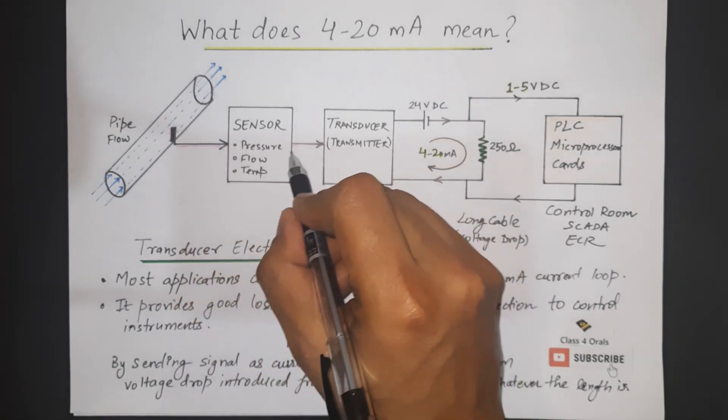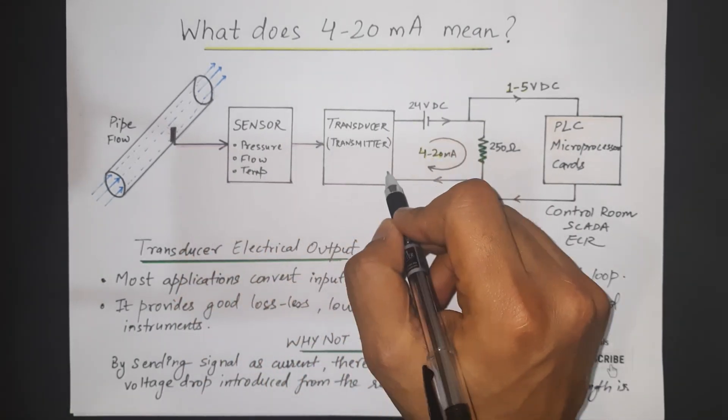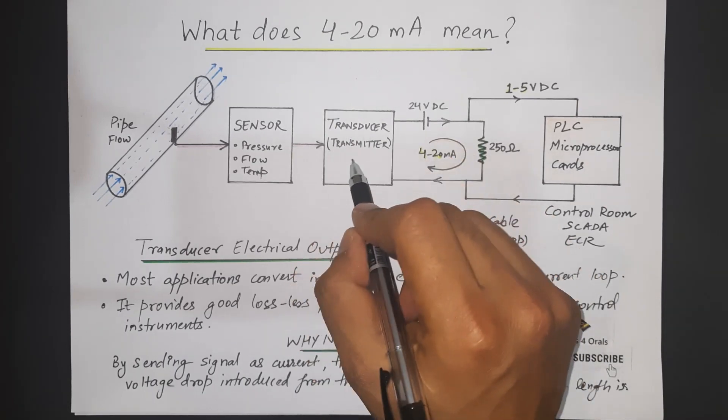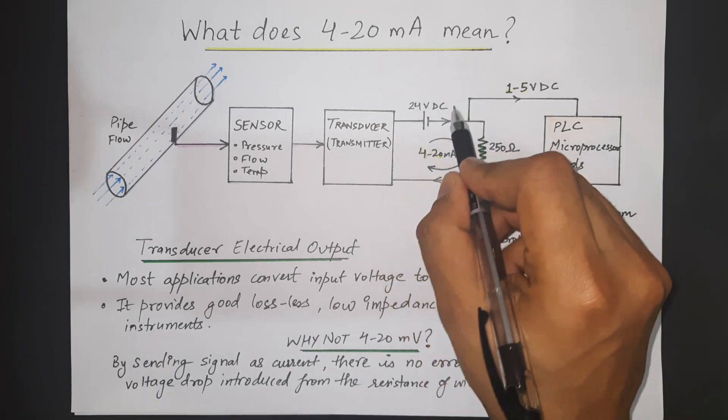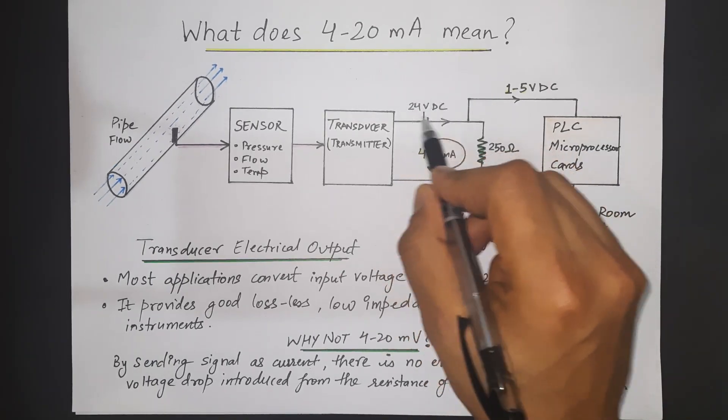It is going to send the value to the transducer. This transducer or transmitter is going to send the signal. It is fed with the 24 volt DC supply.